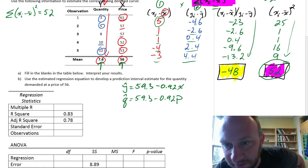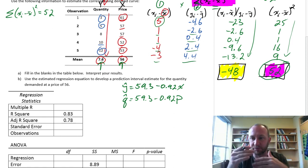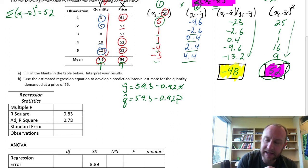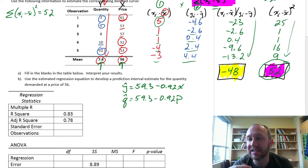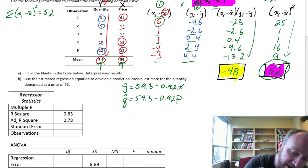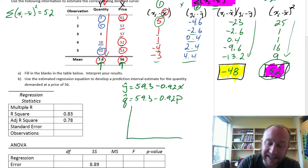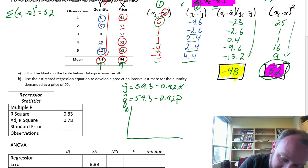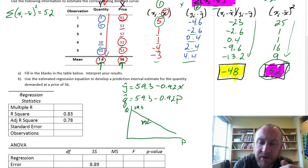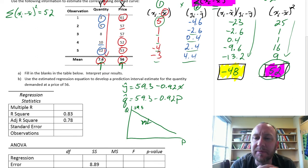What does this mean? Give me some price, and I can estimate the average quantity demanded at that price. We have a demand equation. If I graph this q as a function of price, the y-intercept is 59.3 and the slope is negative 0.92.